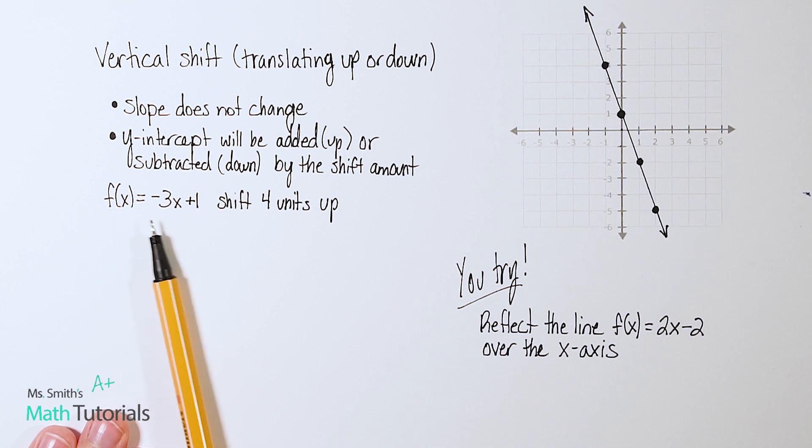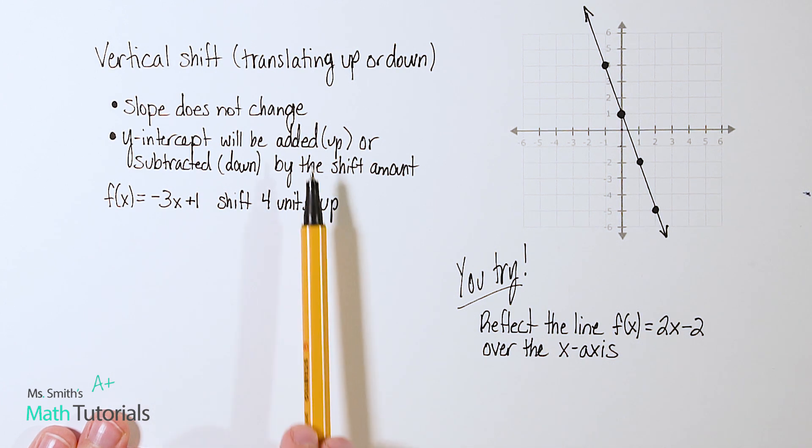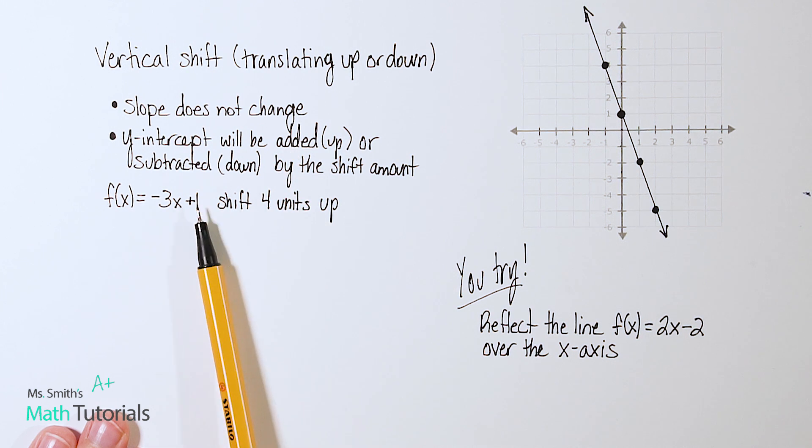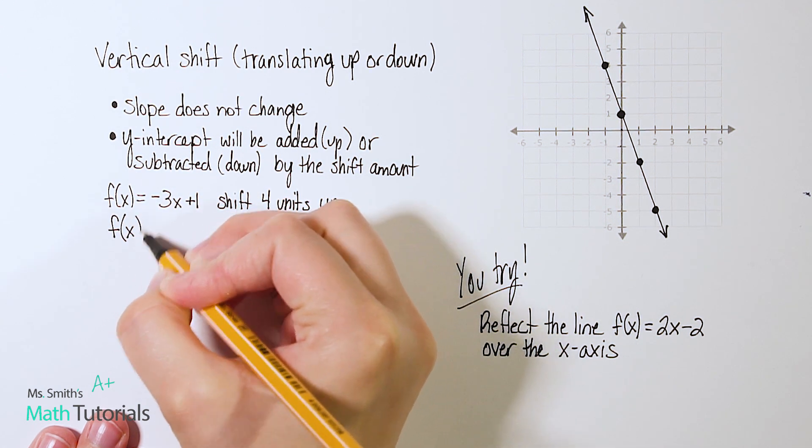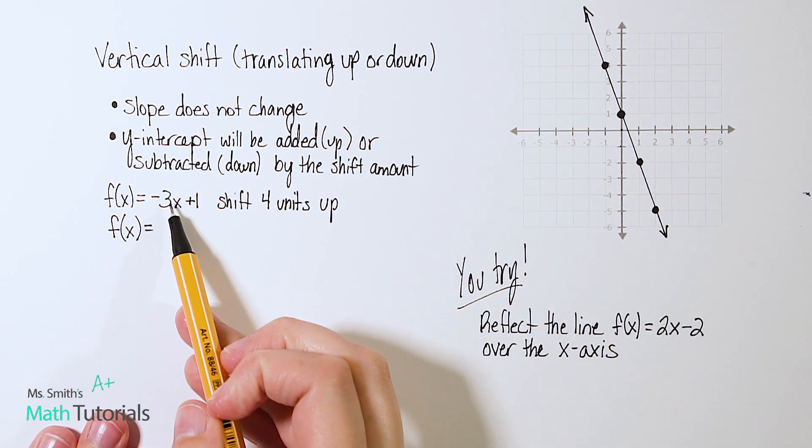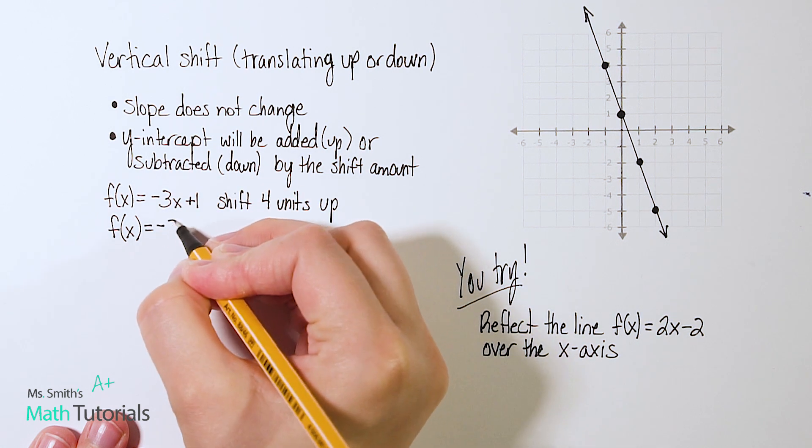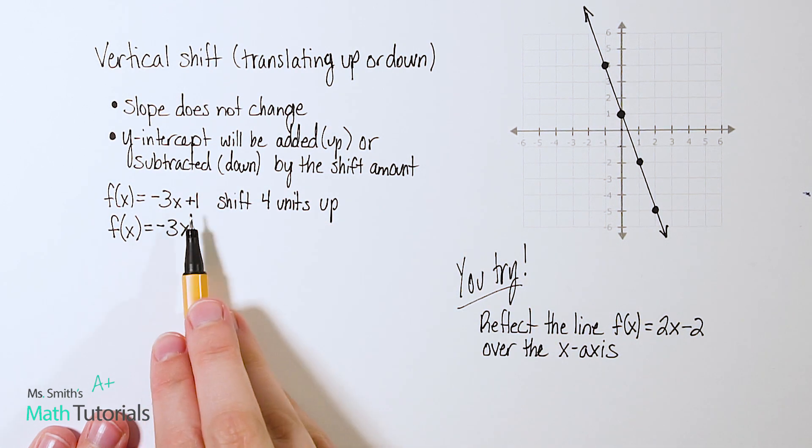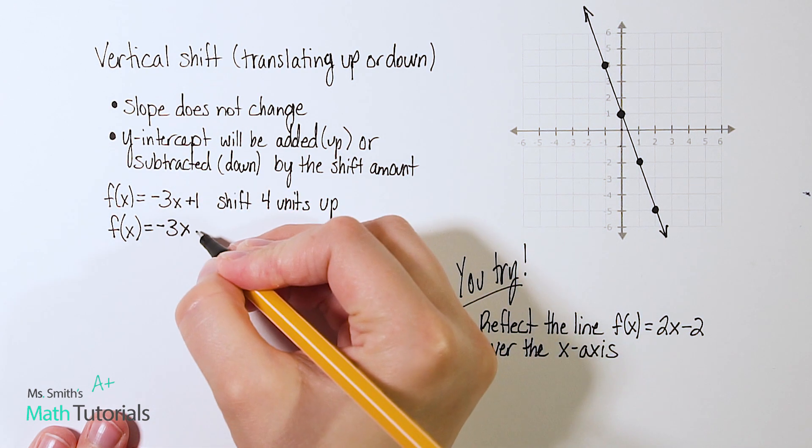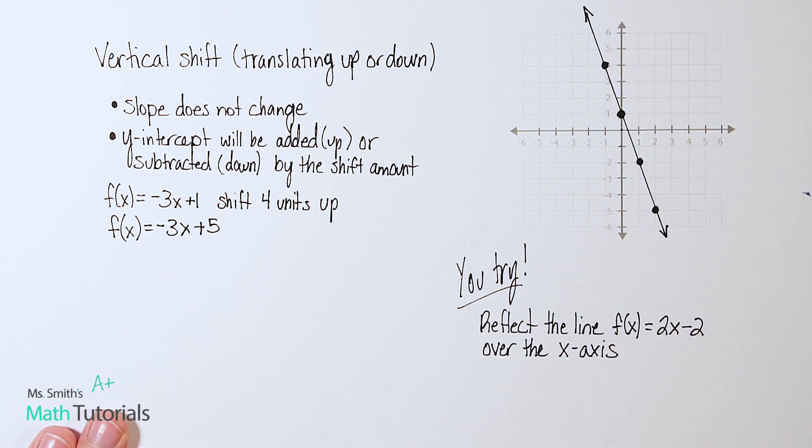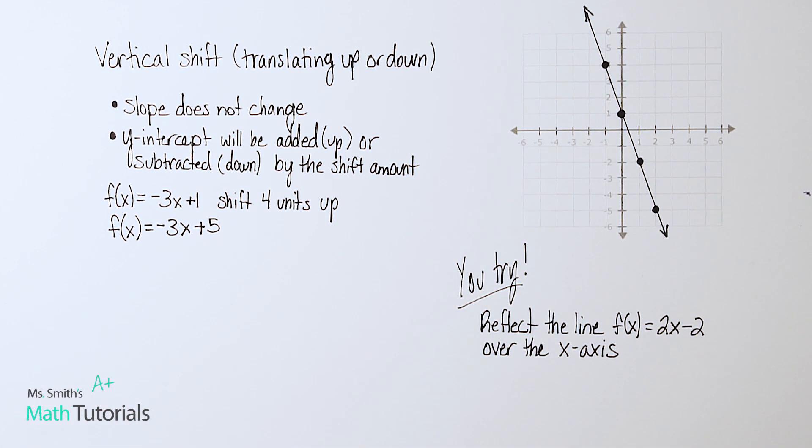So in this case, we've been given the equation and it says shift four units up. So that means we're going to add four to the current y-intercept. So we're going to go from f of x to, our slope does not change. It's going to stay negative 3x. And then we're going to add four to that one. So one plus four is positive five. So let's graph this over here and see how that will look.